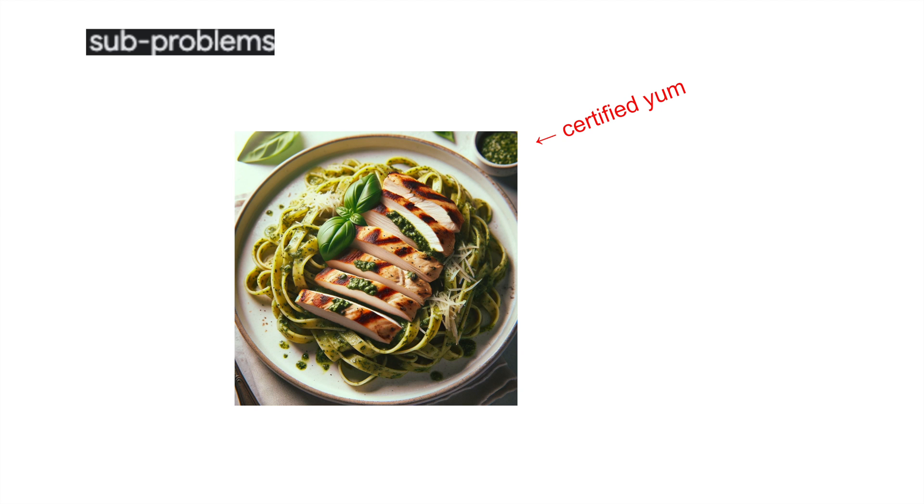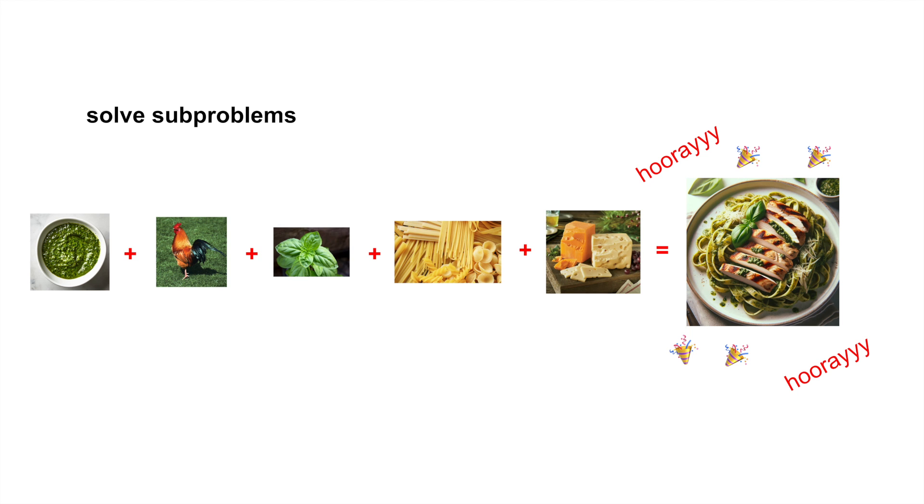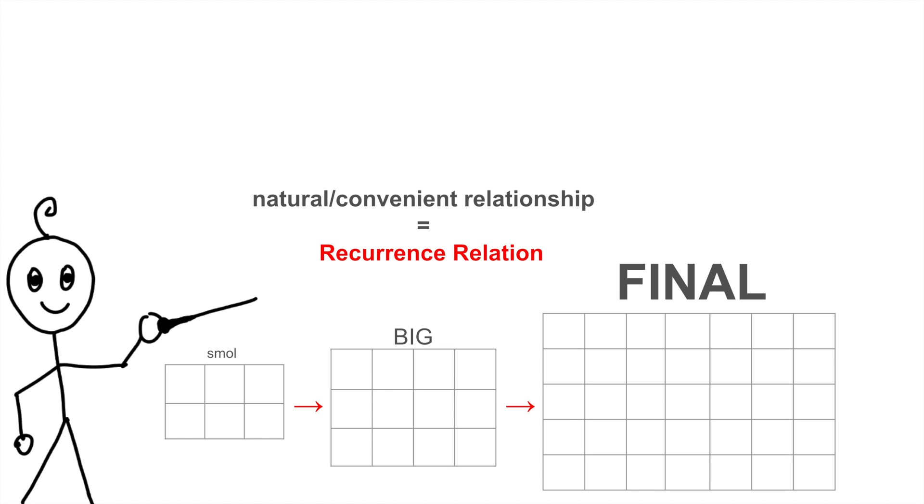How do you make this delicious plate of chicken pesto pasta? We solve the sub-problems. We solve pesto, chicken, and so on. To get pesto, we would need to solve pesto first. So we get the ingredients of pesto. By solving all the sub-problems, we build them together to solve the larger problem that is making chicken pesto pasta. Like in cooking, we want to find a sub-problem such that there exists a natural or convenient relationship or what programmers and mathematicians call a recurrence relation from a smaller sub-problem to a larger sub-problem, all the way up to our final solution. Once we discover the recurrence relation, the DP solution becomes very clear. Finding the appropriate recurrence relation is the hard part.